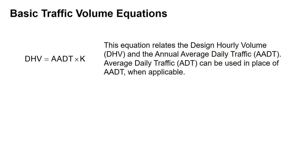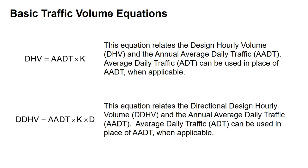Our design hourly volume equals the ADT times the K factor — that's typically 8 to 12% — so we're multiplying our average daily traffic by that K factor to get our design hourly volume. For the directional design hourly volume, we multiply that result by the D factor, which is typically between 0.5 and 0.7. So: DDHV = AADT × K × D.